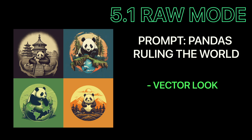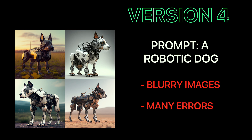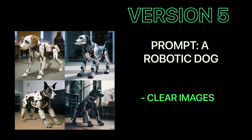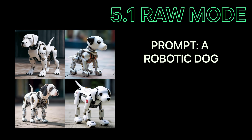Here's another example with a shorter prompt: 'a robotic dog.' In version 4, the images look a bit blurrier and not very clear, with a few errors across all pictures. In version 5, the images were much clearer with more background detail. In version 5.1, the images were directly related to the prompt — 100% robotic — compared to other versions where it was part dog and part robot. In raw mode, it's similar to 5.1, but looks more like a toy, and the bottom-left image has a real dog face.